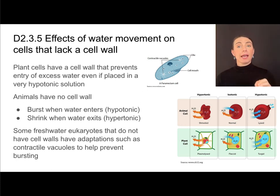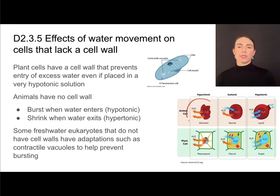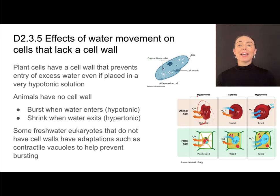Animal cells do not have a cell wall, so when placed in a hypotonic solution, water enters the cell and if enough enters, that cell can actually burst and die. On the other hand, if placed in a hypertonic solution, animal cells will lose water, shrivel up, and get smaller.